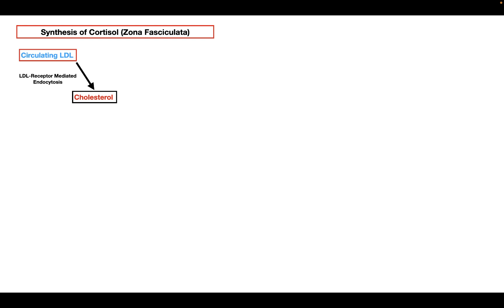The second source of cholesterol is going to be from acetate. The cells inside the zona fasciculata can form cholesterol from acetate, which undergoes a number of reactions that eventually form cholesterol — this is de novo synthesis of cholesterol. Out of these two sources, the most important source is going to be circulating LDL.